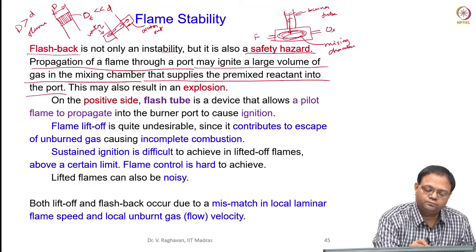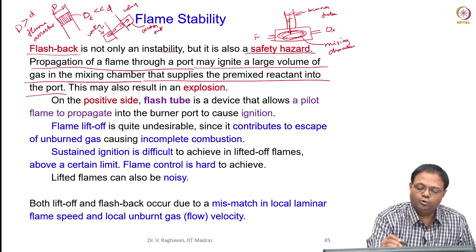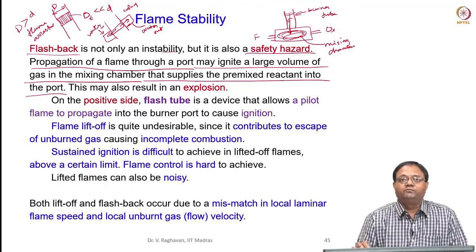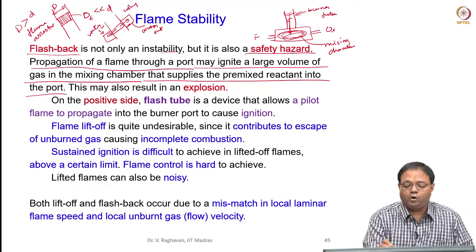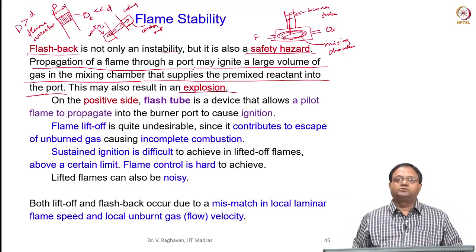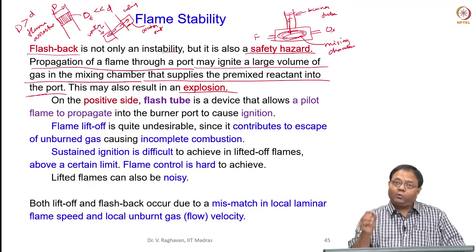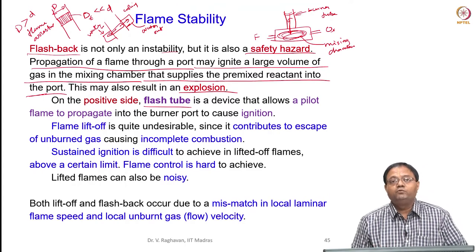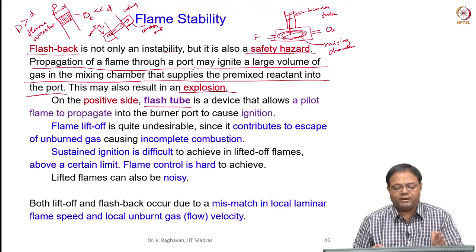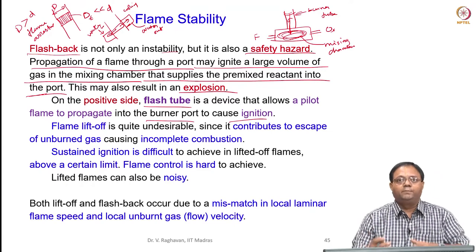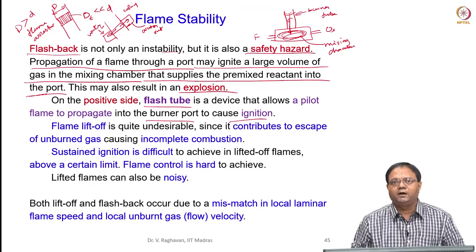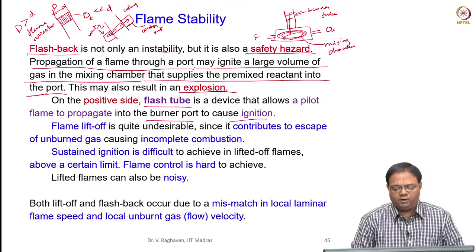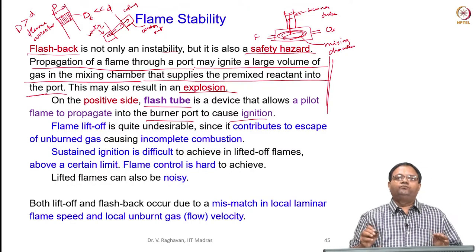You need either a cooling device or a bank of tubes to arrest the flame propagating down. Flashback is a safety hazard in any burner or combustion chamber. If we do not provide flame arresters and flashback occurs, it may ignite the large volume of premixed reactant in the mixing chamber, causing rapid combustion and explosion. Another application of quenching distance is the flash tube — a device that allows premixed reactant to flow through it and the flame to propagate, causing ignition in domestic cooking setups and similar applications.